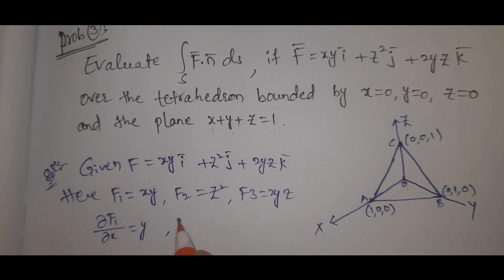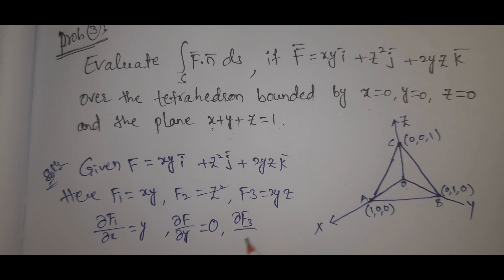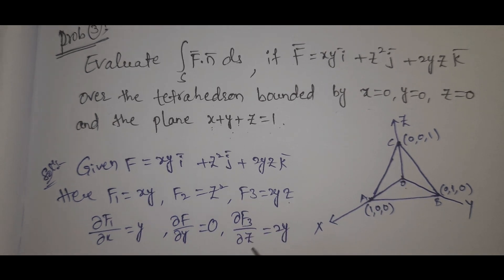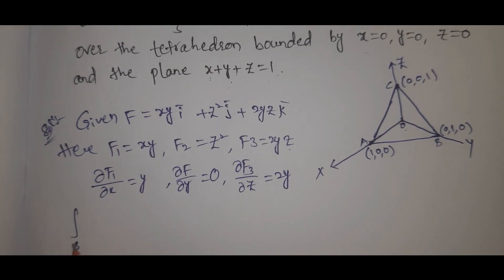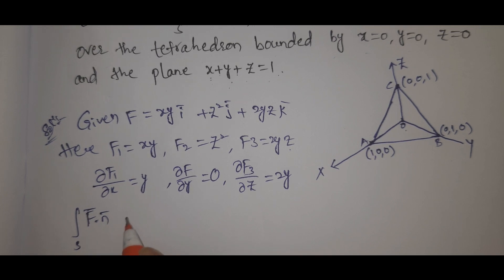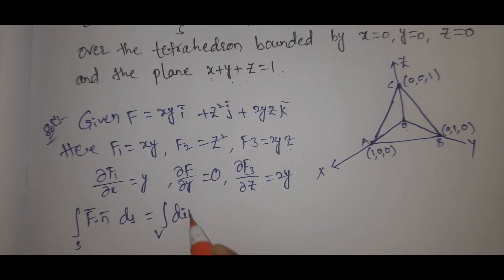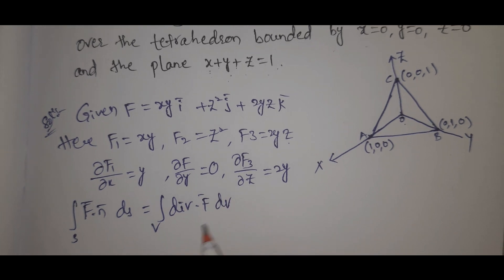What is ∂F1/∂x? That is y. ∂F2/∂y: z-squared with respect to y is 0. ∂F3/∂z: 2yz with respect to z is 2y. By Gauss Divergence Theorem, the integral over S of f-bar dot n-bar ds equals the triple integral over V of divergence of f-bar dv.